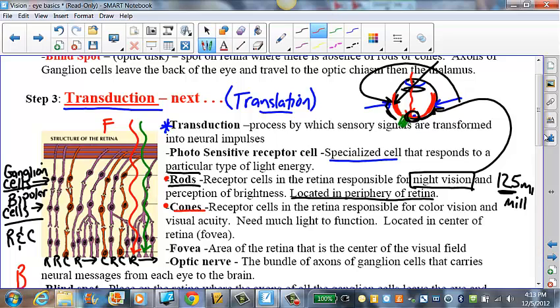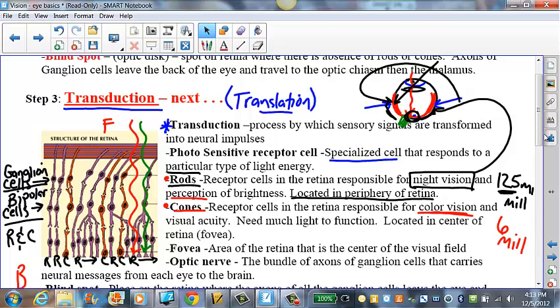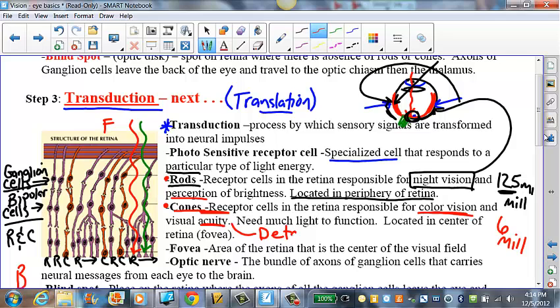That brings us to the cones. The cones are downtown, in the center of the city of the retina. They are responsible for color vision. There's about 6 million in each eye, so there's less of them, but they're very densely packed around the center. Because they're so densely packed, when we're looking straight at something, we can see the best detail, the fine images of something. That's called visual acuity. And we need a lot of light to function here.